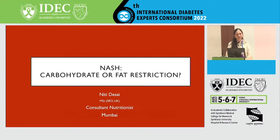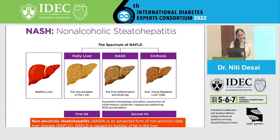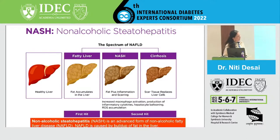NASH — does that involve carbohydrate or fat restriction? We all know that NASH is basically the advanced form of NAFLD. Here you can see that when a healthy liver accumulates fat and then gets inflamed, we have fatty liver, which goes into NASH, and then of course fibrosis and further cirrhosis.